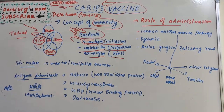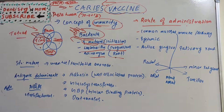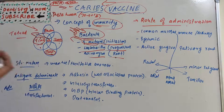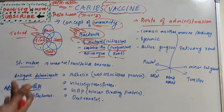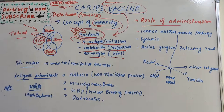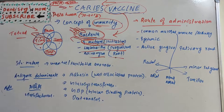Caries occurs when dental plaque forms, bacteria deposit over the plaque, and the plaque acts on consumed substrate — like sucrose or other cariogenic food — producing lactic acid that demineralizes the teeth, ultimately resulting in caries. Now, focusing on Streptococcus mutans, we look at its antigenic determinants.